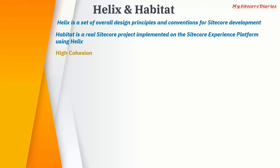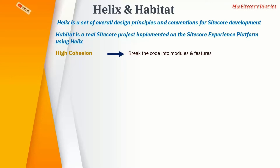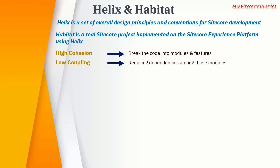The first principle in Helix is high cohesion — it means breaking down the code into modules and features. If you have a huge codebase, break it down into modules; if you have many features on your website, break them into separate feature units. The second principle is low coupling, which means reducing the dependency among those modules and features.